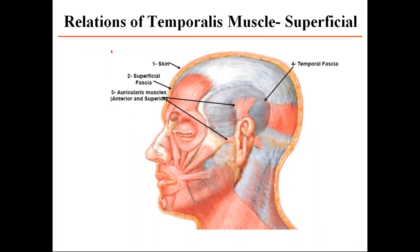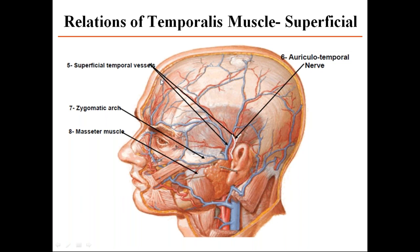For the relations of the temporalis, we read both superficial and deep relations. The superficial relations are: skin, connective tissue, auricularis muscle anteriorly and superiorly, and temporal fascia. In addition, there are superficial temporal vessels, auriculotemporal nerve, zygomatic arch, a part of the masseter muscle, and the zygomatic bone temporal nerve.